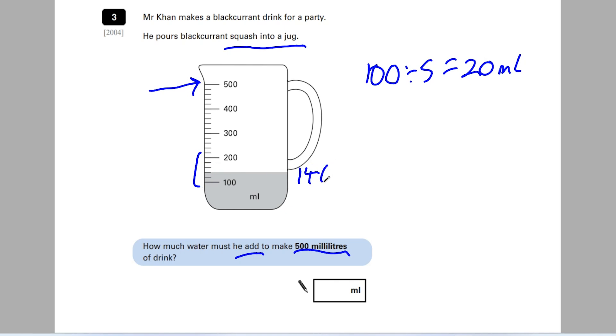So currently we have 140 millilitres in this jug. But Mr Khan needs 500 millilitres. So I'm going to do 500 take away 140. 0 take away 0 is 0, 0 take away 4 can't do. That becomes 4, that becomes 10. 10 take away 4 is 6, and 4 take away 1 is 3. So he needs another 360 millilitres to get to that 500 mark. So that is our answer. He must add 360 millilitres. You can see there's a number of steps involved, but the main one is to work out what these increments are.